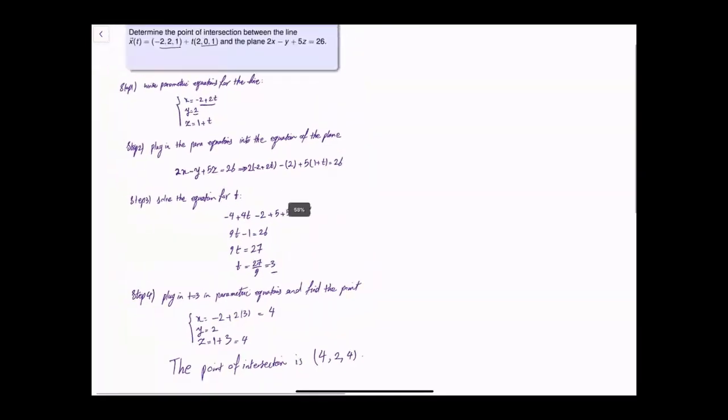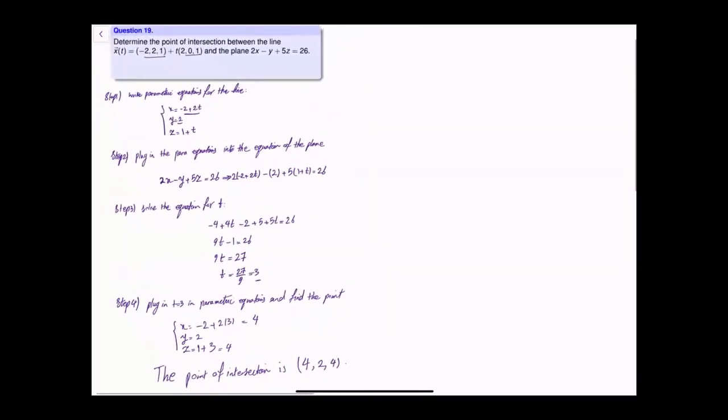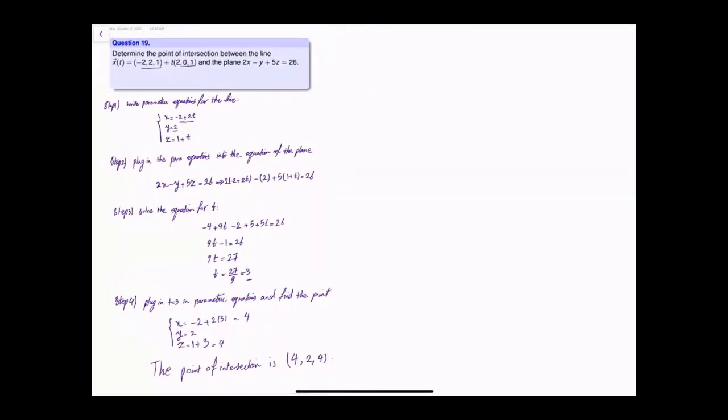So these are the steps you need to take when you're working with finding the intersection point of a line and a plane. Any questions, any comments?